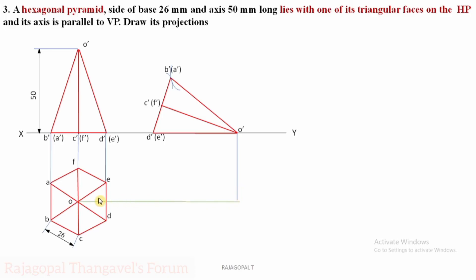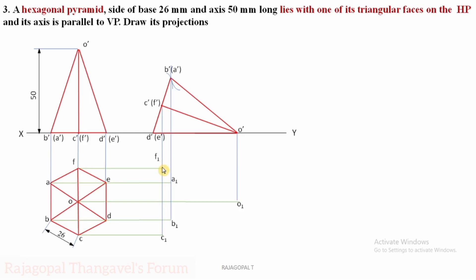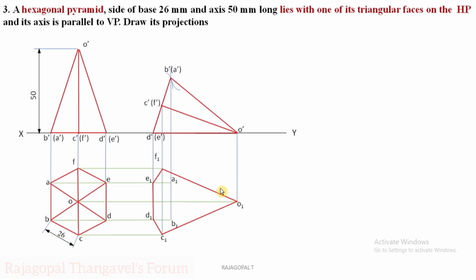Extend the projector of O dash — both family members meet at one point, making it O1. Similarly, extend A dash to meet at A1 and B dash to meet at B1. Then C dash and F dash projectors give C1 and F1 respectively. D dash projector meets at D1, and E dash meets at E1. Now complete the boundary: O1 to F1, F1 to E1, E1 to D1, D1 to C1, and C1 back to O1. This is the outer boundary of the hexagonal pyramid solid.